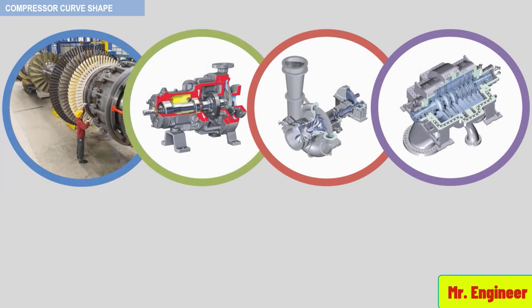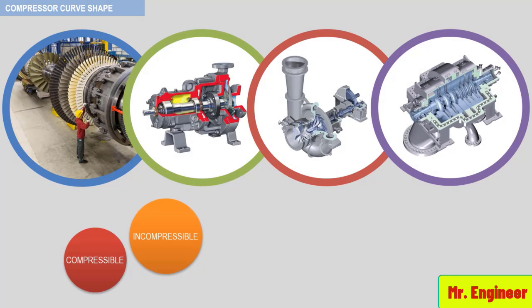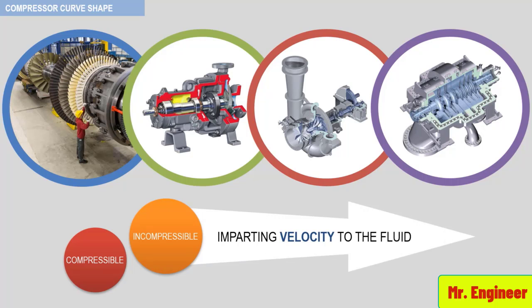In this section, we will define how the centrifugal compressor curve is generated. Specifically, we will see how all dynamic machines produce head, whether they process a compressible or incompressible fluid, by imparting a velocity to the fluid.